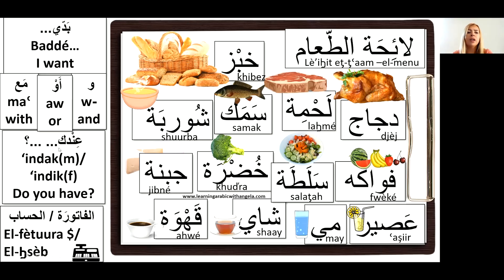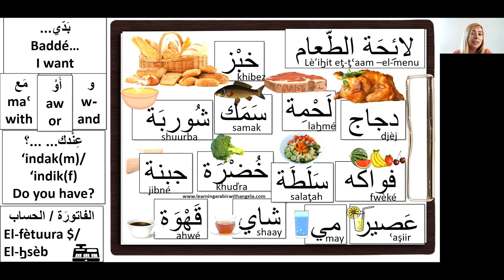If you're asking someone 'do you have something?' we use '3indak khibiz,' '3indak samak,' '3indak may' — and '3indik' when addressing a female. As mentioned, not only is 'baddi' not a real verb, but '3ind' here is actually an adverbial of place and time. It literally means 'at,' so you're asking 'is there at yours something?' We don't really have the verb 'to have' in this context — normally we use the adverbial '3ind.'